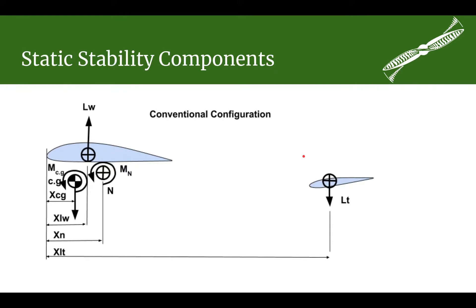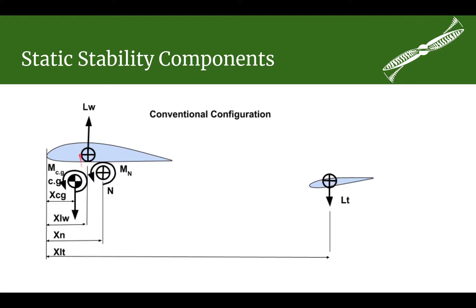There's going to be quite a bit of math involved in this — there just has to be, there's no way around it. But before we get into that math, we need to talk about some of the terms we're going to be using. I've drawn a diagram here to help talk about those terms. We've got a conventionally configured airplane with the main wing up front and a horizontal tail in back.